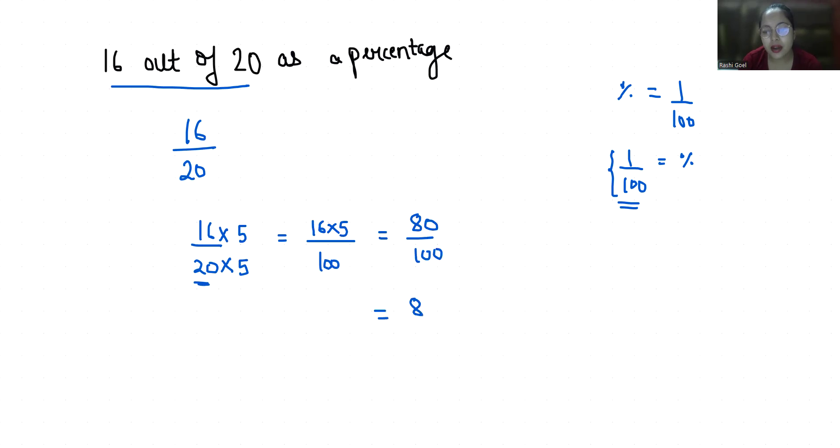We know that in place of 1 by 100 we will put this sign, that is percentage. So we can say that 16 out of 20 is equal to 80 percent. I hope it's clear and you find it useful.